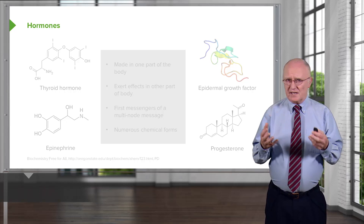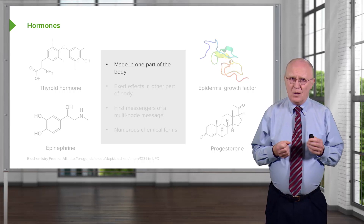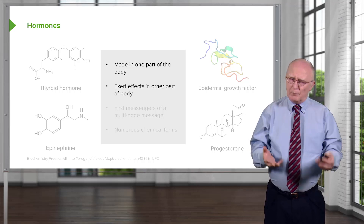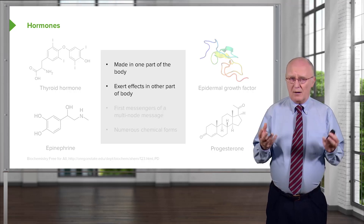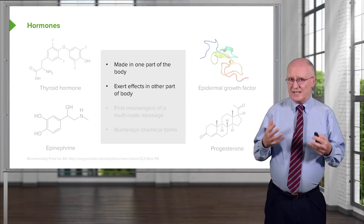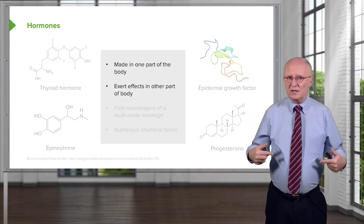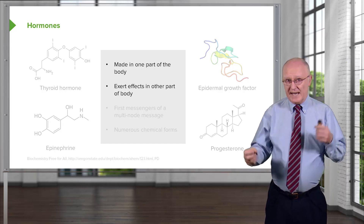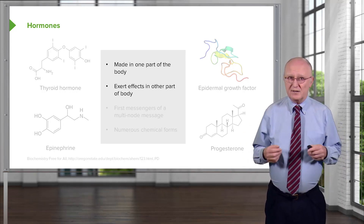Hormones are molecules that coordinate the efforts of the organism, and they have to work within the restrictions of the lipid bilayer. Hormones are made in one part of the body and move through the bloodstream to another part to exert their effects. For example, our adrenal glands release epinephrine — also known as adrenaline. In a dangerous situation, the adrenal gland releases epinephrine, which travels to muscle cells and liver cells, telling the muscles to run and telling the liver to release glucose so those muscles have energy.